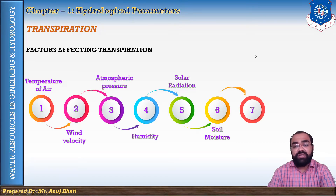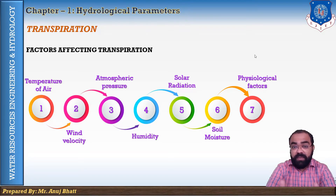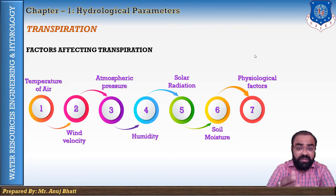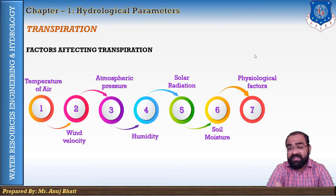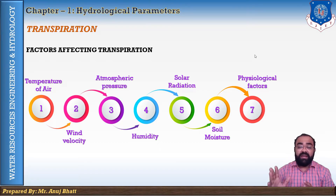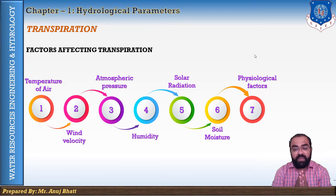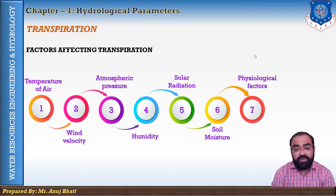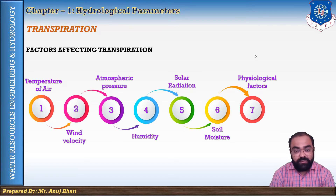The next factor is physiological factors. Transpiration depends upon the physiological factors of the plant, such as the density and characteristics of the stomata, the extent and character of the protective coating, and the leaf structure. The stomata contain numerous pores through which water escapes as air enters, resulting in transpiration. The stomata open with daylight and close with darkness. When stomata are fully open, transpiration will be at its maximum.